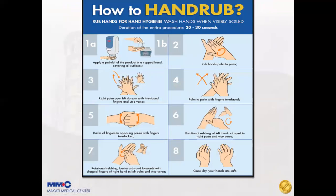There are two posters available in our hospital to guide you on the proper steps of hand rubbing and hand washing. For hand rubbing, the poster 'How to Hand Rub' instructs you to rub hands for hand hygiene. If you have visibly soiled hands, you should wash your hands instead. The duration of the entire hand rub procedure is 20 to 30 seconds. Apply an alcohol-based product to a cupped hand, covering all surfaces. The hospital has both automatic and palm-style dispensers available.